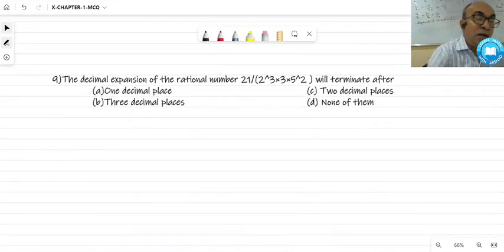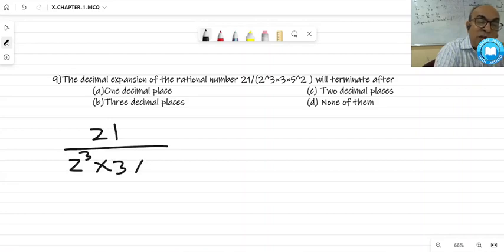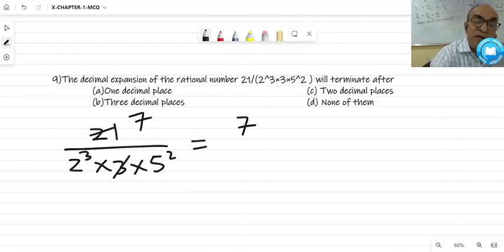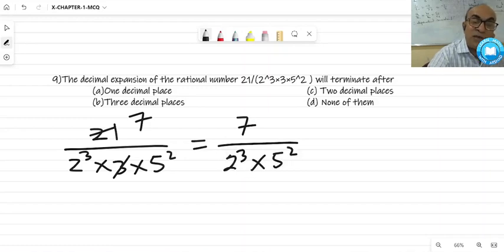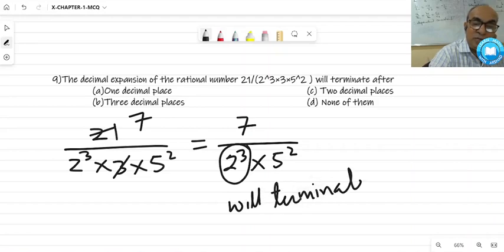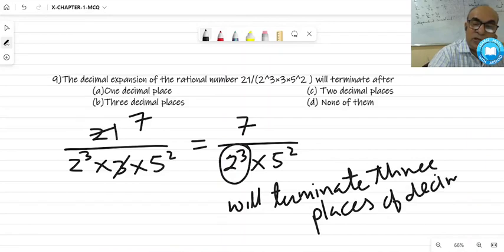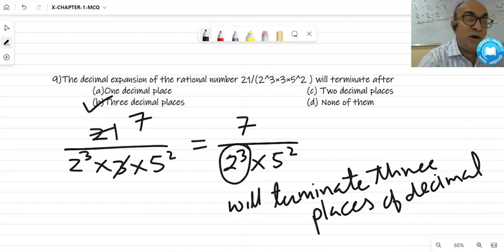Question number 9. The fraction is 21 by 2 cube into 3 into 5 square. We have to know that it will terminate up to how many places of decimals. First step is simplify. 3 goes into 21 seven times. After simplification, factorize denominator, but it is already given in factorization form. It contains only 2 and 5, so it is a terminating decimal. The highest power is 3, so it will terminate 3 places of decimal.